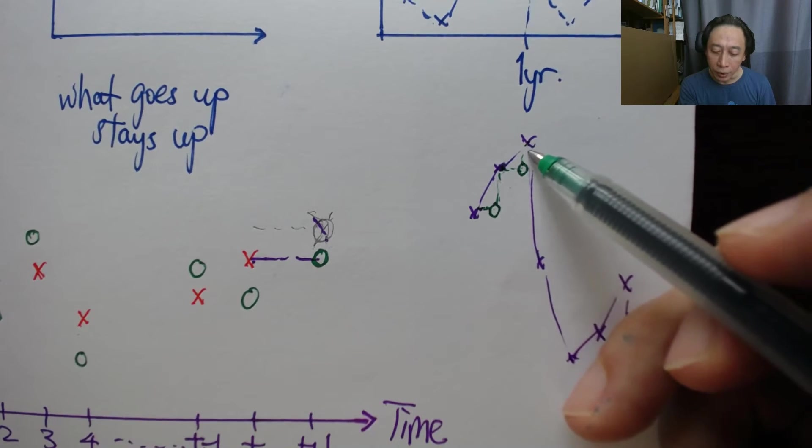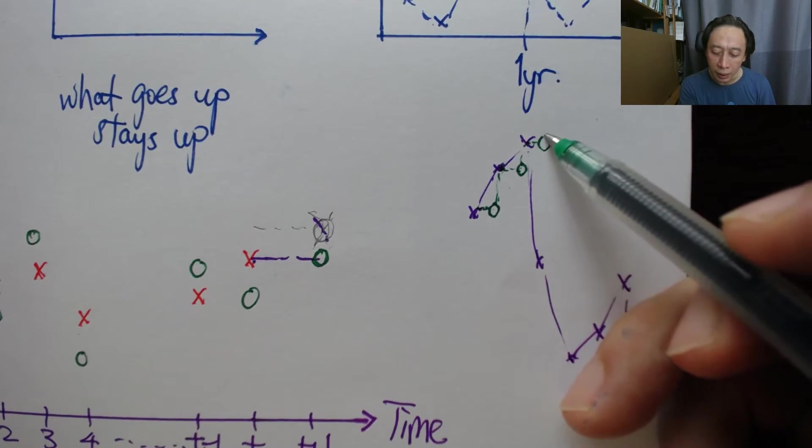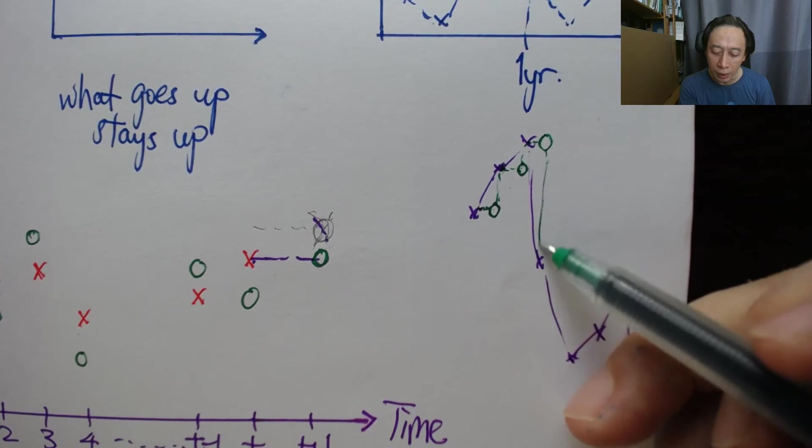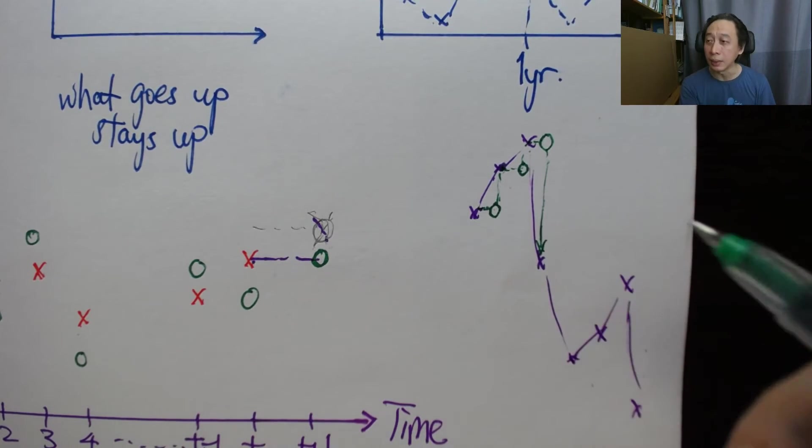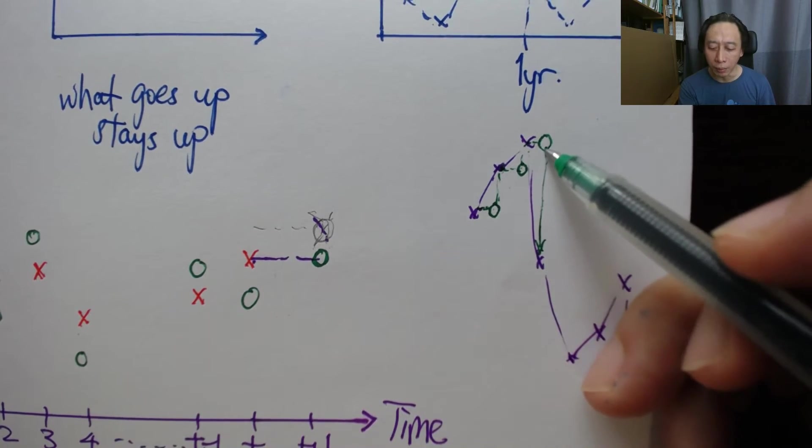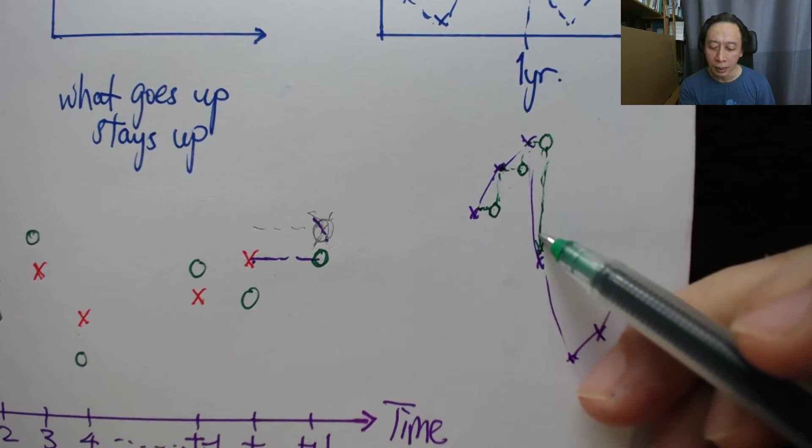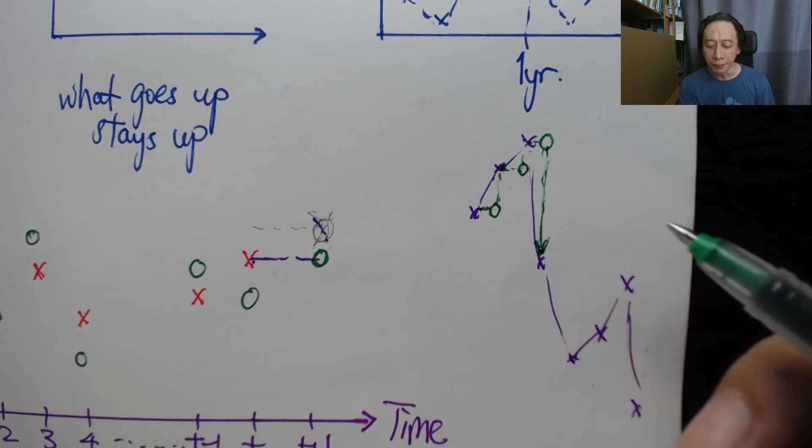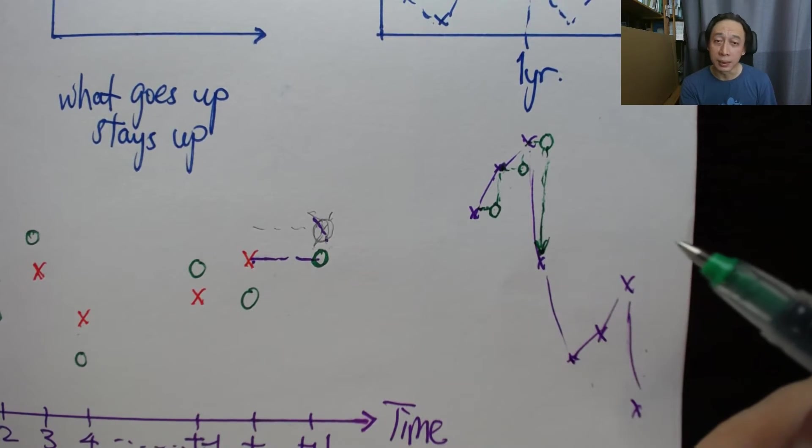And then we are wrong. And so we say, okay, we forecast here and then we realize that we are so wrong. So you start to wonder, is it any good that we actually use naive method?